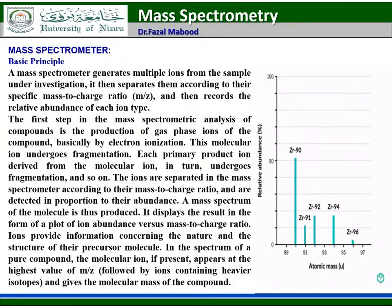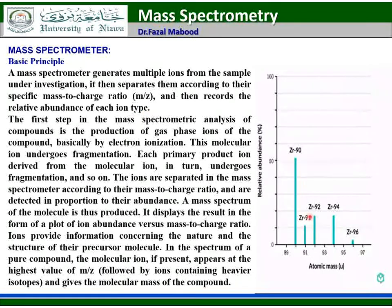The machine used in mass spectrometry is called a mass spectrometer. A mass spectrometer generates multiple ions from the sample under investigation, then separates them according to their specific mass-to-charge ratio, and records the relative abundance of each ion type. In the mass spectra, the x-axis represents the mass-to-charge ratio and the y-axis represents the relative abundance.